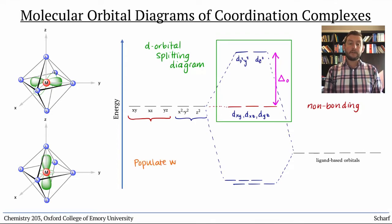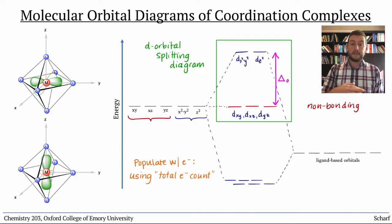To populate the diagram with electrons, we use the total electron count, starting at the bottom and populating all those with electrons, and moving our way up in energy. Alternatively, we can almost always just fill all the bonding orbitals and use the d electron count to tell us how many electrons fill the d-splitting diagram.